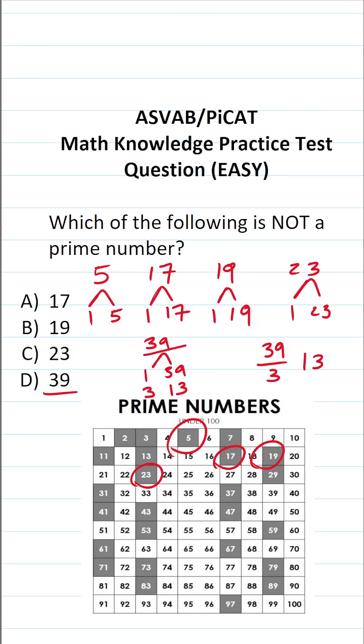Now, since 39 is divisible by something other than one and itself, notably three and 13, it's not considered prime. Therefore, 39 is not a prime number.